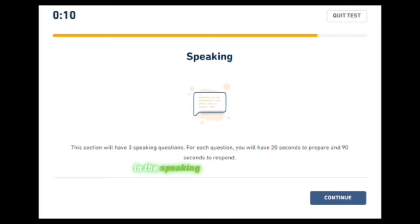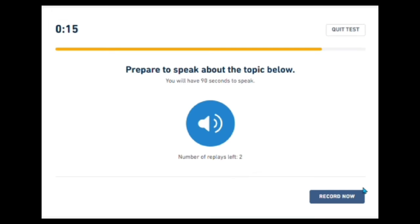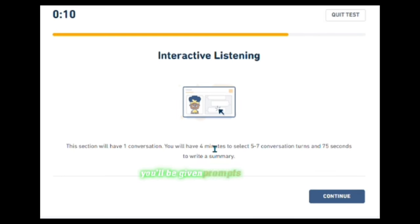In the speaking section of the Duolingo English test, you will be tested on your ability to speak English fluently and clearly. This section checks how well you can express your thoughts, ideas, and opinions in spoken English. You'll be given prompts or questions and you will need to respond by speaking into the microphone.